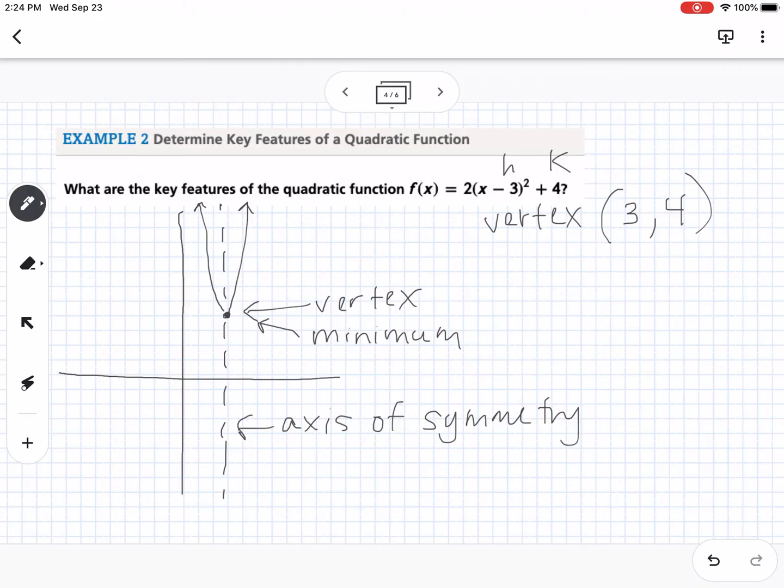Some other things: we've practiced domain and range with all types of functions, but it's always helpful to come back and review that. The domain of any parabola is always going to be negative infinity to positive infinity. My range on this one, I have a minimum value. So my minimum value is four, and then it's going up forever, so it's up to positive infinity. Those are the key features of that graph.